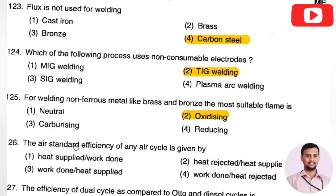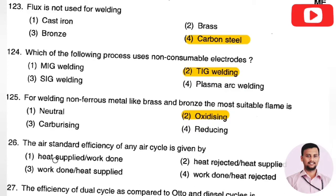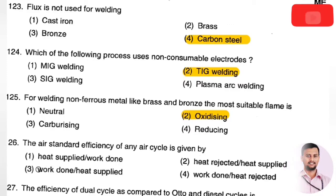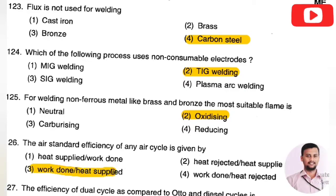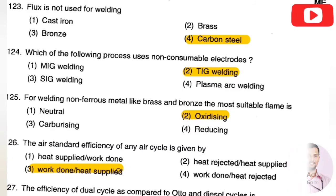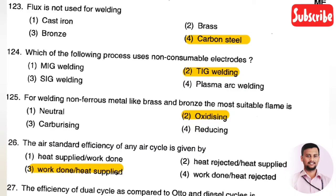The next question: the air standard efficiency of any air cycle is given by — Option 1: heat supplied to work done, Option 2: heat rejected to heat supplied, Option 3: work done by heat supplied, Option 4: work done by heat rejected. The right answer is Option 3 — work done divided by the amount of heat supplied in the cycle.